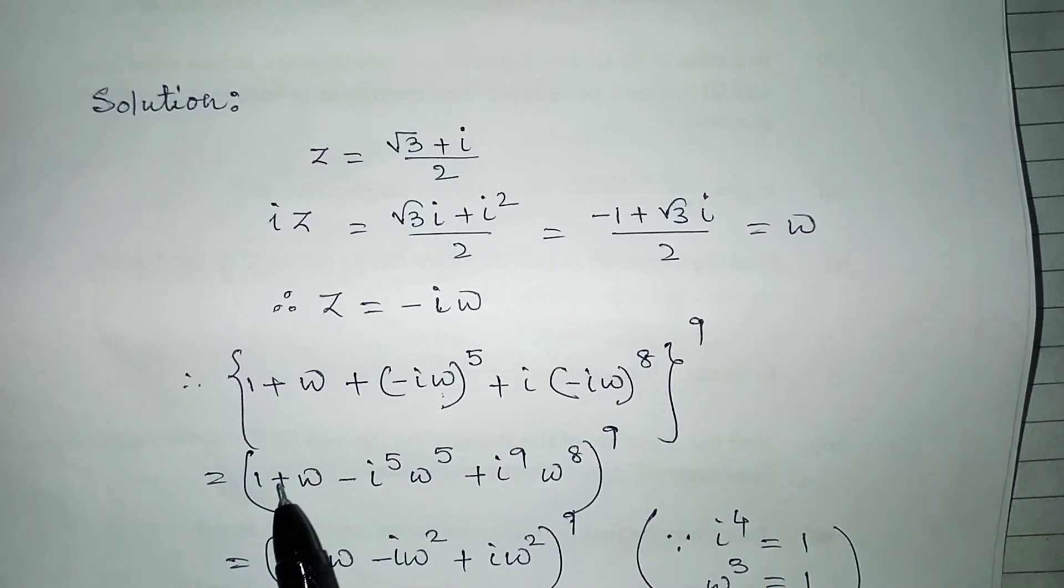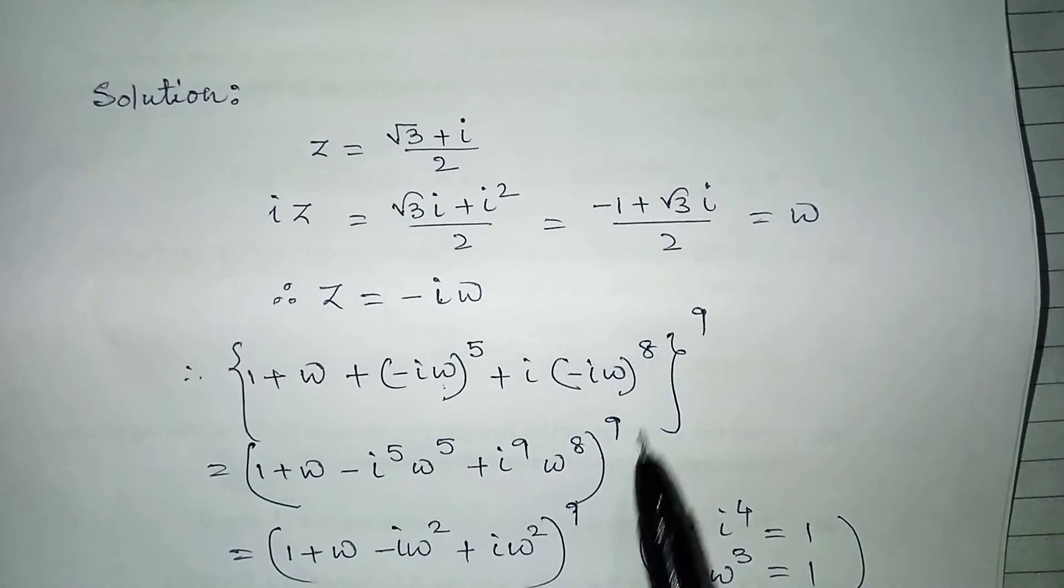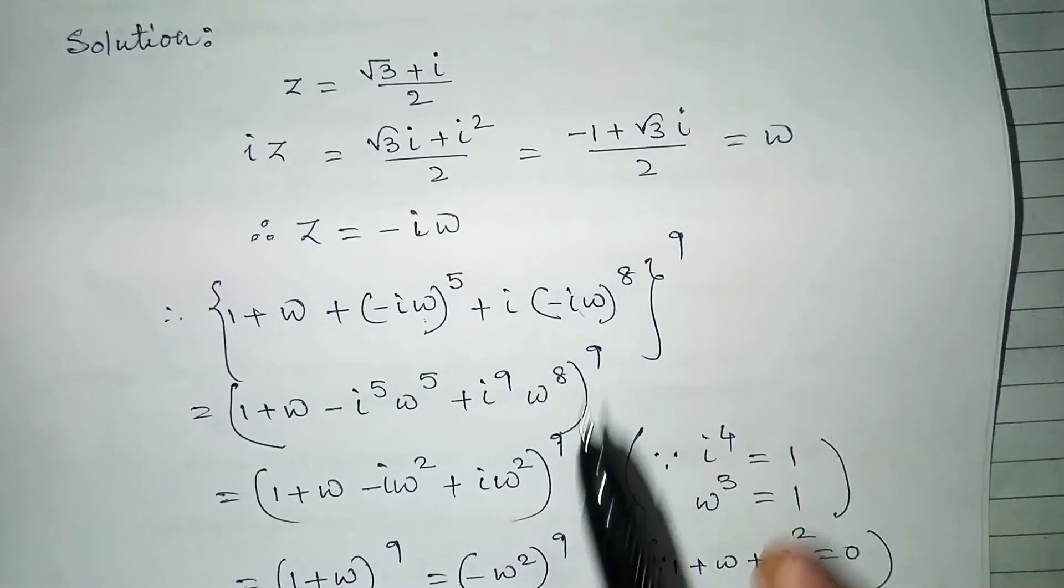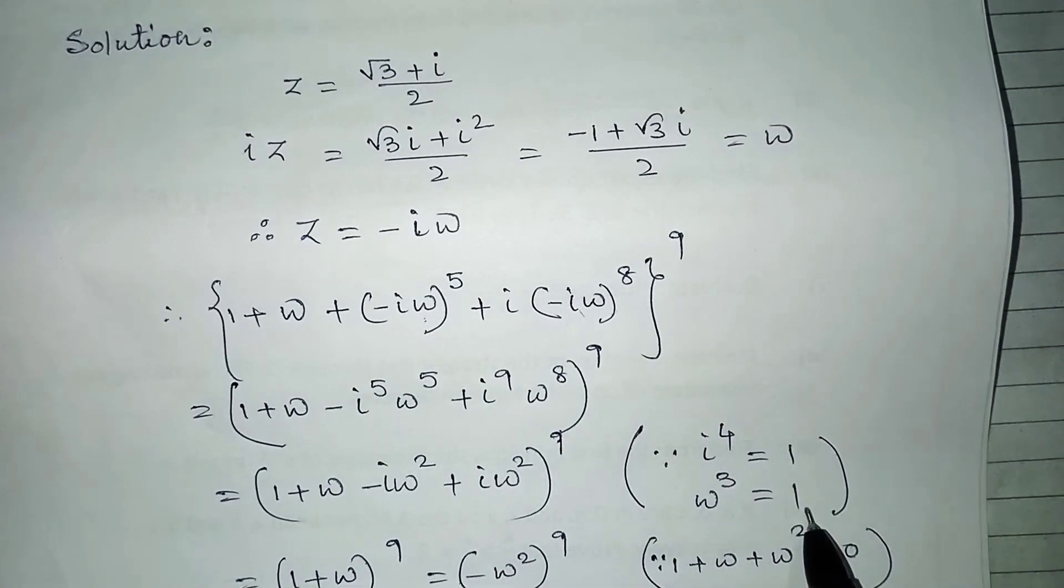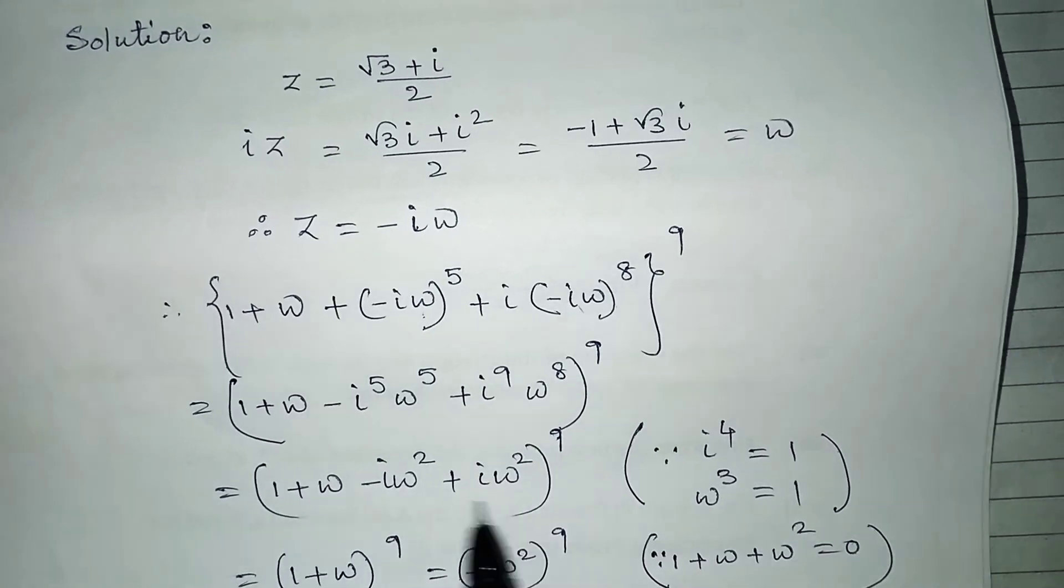Now one by one we just open the brackets. One plus omega minus i to the power five, omega to the power five, plus i to the power nine, omega to the power eight. As you know, i to the power four is one and omega cube is one.